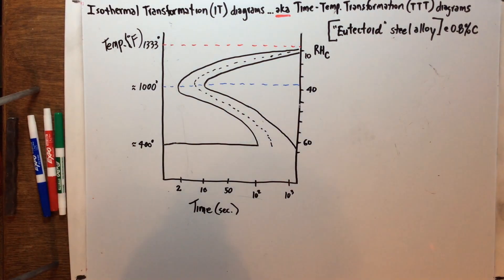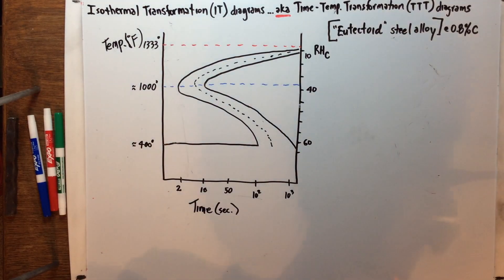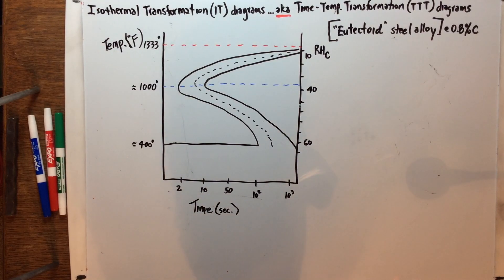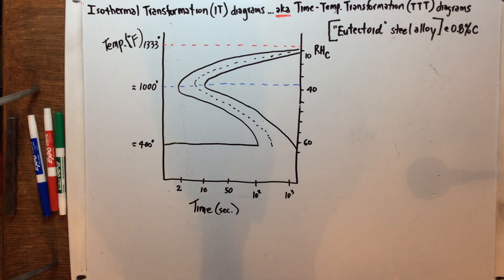Welcome back. This morning we're going to continue our discussion on phase transformations. Yesterday we left off with a discussion of the various microstructures in steels — starting with very soft spheroidite, then moving into more traditional pearlite, then bainite, and finally martensite. Now what I have for you this morning is the first diagram.